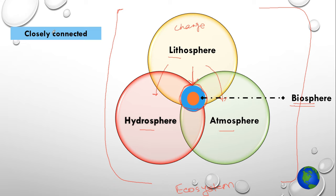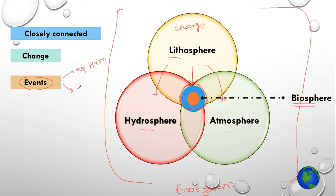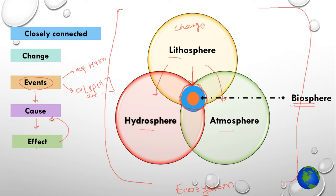These changes are known as events. The events can be natural events like earthquake, hurricane, or cyclone, or they can be man-made events like oil spill or air pollution. Once these events have occurred, they will become a cause, and each cause will have some effect in one or more spheres. Again these effects will become cause for another event, and those causes will have further effects. There is a cycle of cause and effect which is continuously going on within an ecosystem.